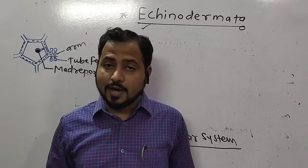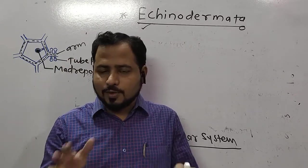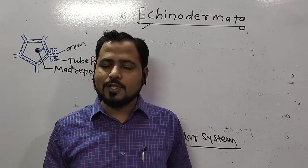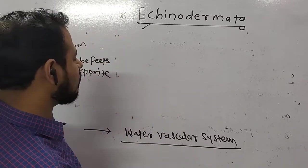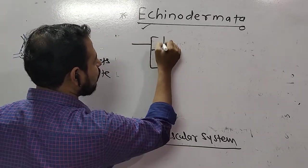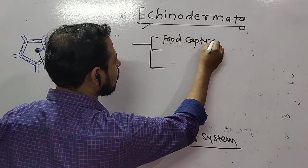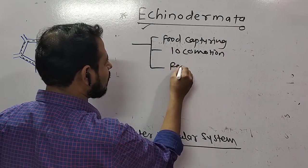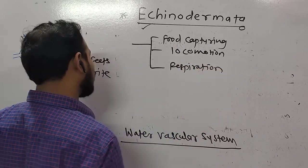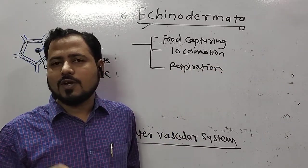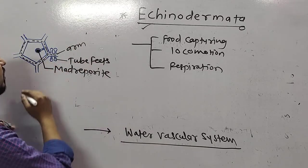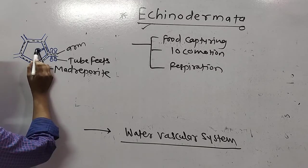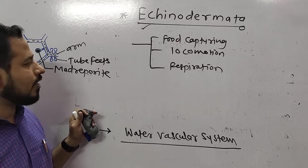They respire by the water vascular system, transport materials by it, locomote by it, and capture their food by it — it is truly a multi-tasking system. Functions include food capturing, locomotion, and respiration, all carried out by the water vascular system. Looking at the diagram of the internal structure of a starfish, water enters the body through the madreporite.